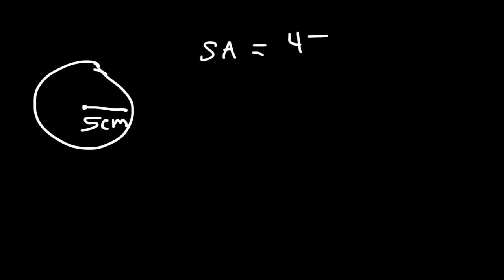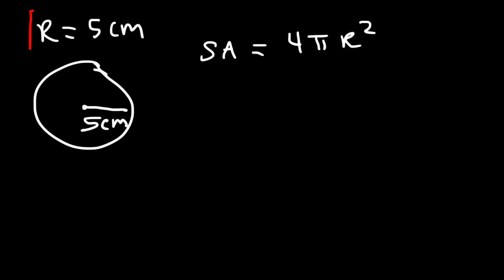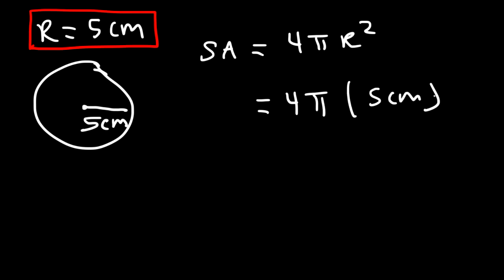Let's work on an example problem with the sphere. Let's say we have a sphere with a radius of 5 centimeters. What is the surface area and the volume of the sphere? Starting with the surface area, we know it's 4 pi r squared, and r is equal to 5 centimeters. So this is going to be 4 pi times 5 centimeters squared.